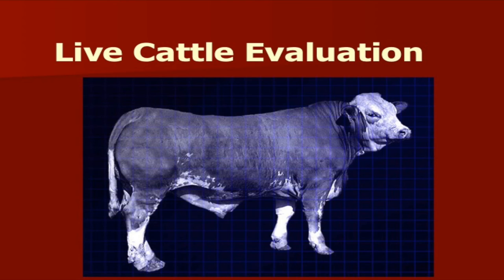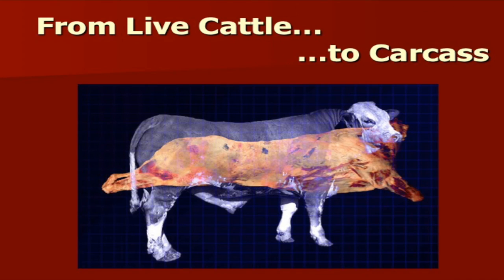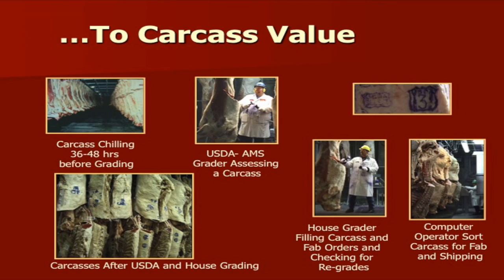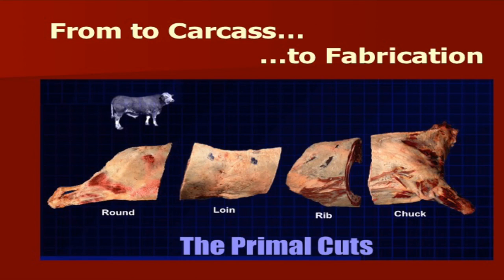Today's task is to take a live animal, as you can see here, and imagine what's up under the hide — when that animal is fabricated out, what are we going to have? We try to take that to the next step and assess carcass value on those animals and what the true value of that carcass will be. That's the challenge for today's lecture. Those animals are then processed from carcass, which has a value, and ultimately fabricated out and sent on to the consumer.